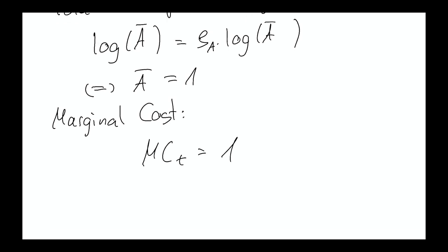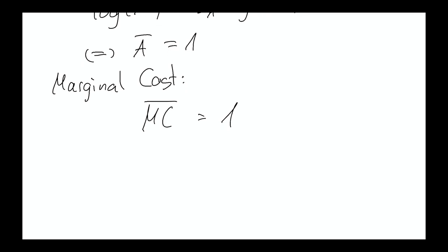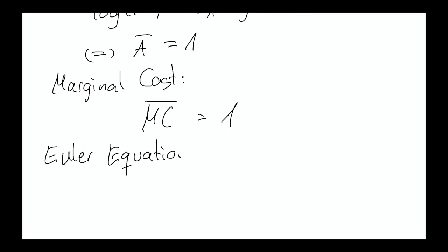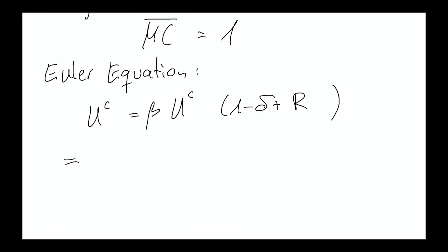Now we have marginal cost, which is also very easy — given by this equation, we drop time indices and denote it with a bar. The Euler equation gives you the steady state interest rate. Dropping time indices and in the absence of shocks there's no uncertainty, so we don't need the expectation operator either. We can then simply rearrange to get the steady state interest rate.